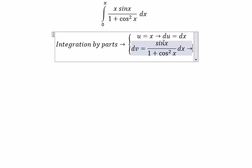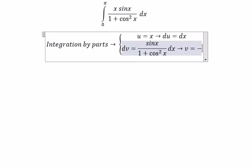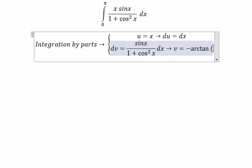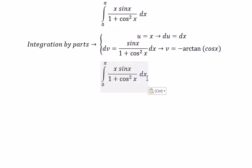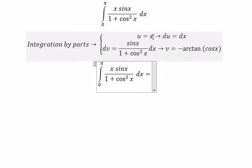The integration of this gives us v equal to negative arctan of cos x.